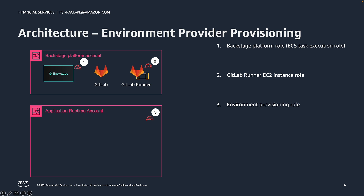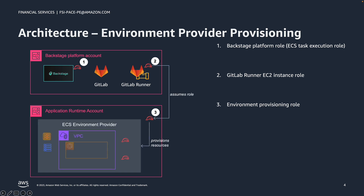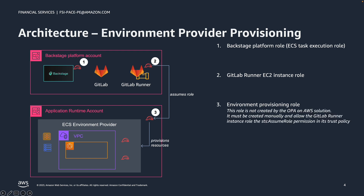Environment provider resources are provisioned through Terraform, CDK, or other infrastructure as code technologies. This infrastructure code is executed as part of a GitLab pipeline. Therefore, the GitLab runner instance role will assume the environment provisioning role so that the required AWS resources are created using the permission policies of the environment provisioning role. It's important to note that the OPA on AWS solution does not create the environment provisioning role in target accounts. This must be created outside of the OPA on AWS installation, and the role should include a trust policy which allows the STS assume role action from the GitLab runner role.